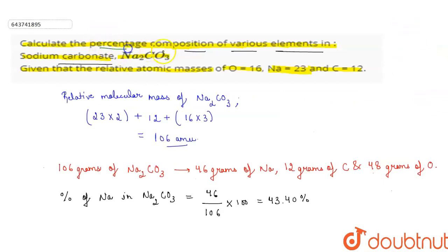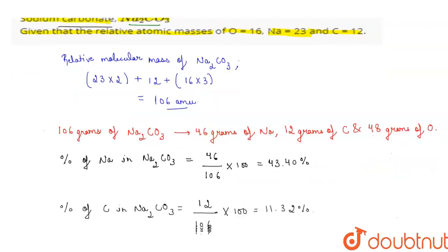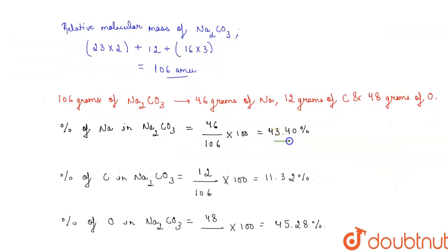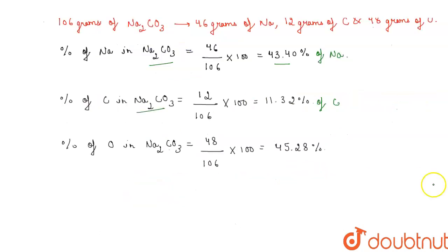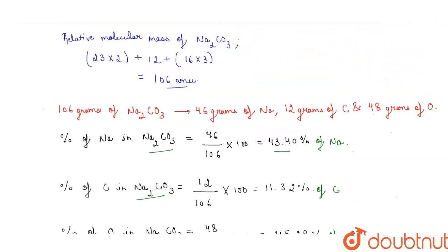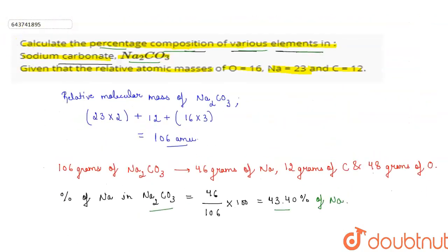The percentage composition of various elements in sodium carbonate are: 43.40 percent of sodium, 11.32 percent of carbon, and 45.28 percent of oxygen is present in sodium carbonate. So this is the solution. Thank you.